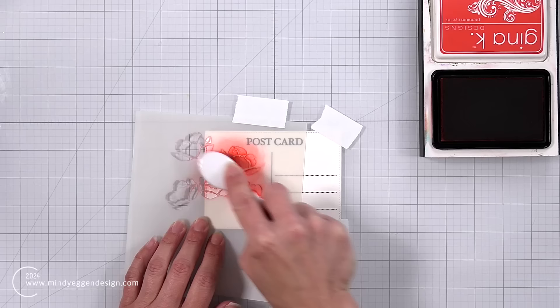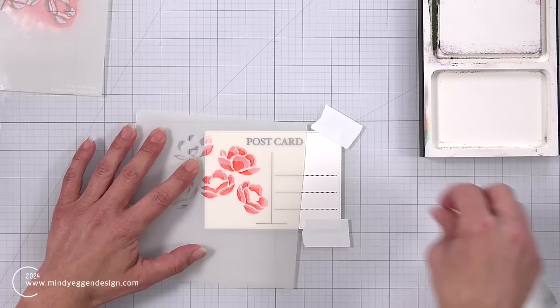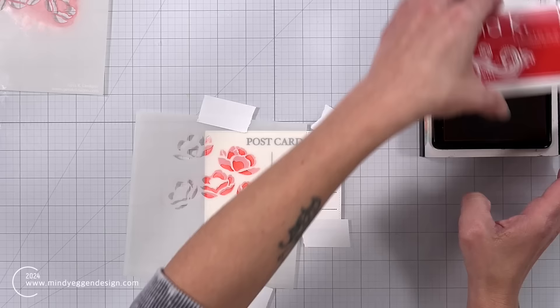So using my blending brush just lightly adding that color for that base layer of my flower. Then I'm just going to remove that Post-it tape, bring in the next layer of the stencil and they are labeled down in the bottom corner either one, two, three or four. So this is layer number two to add detail to our poppies.